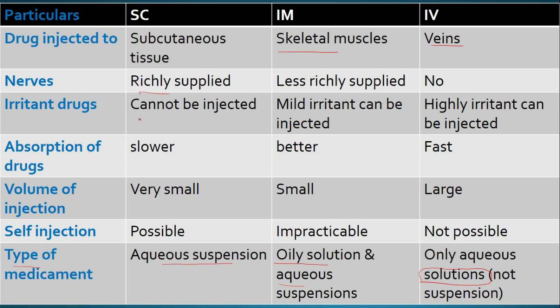Because of the nerve supply, we cannot administer irritant drugs through the subcutaneous pathway, since the subcutaneous route is richly supplied with nerves. We can administer mild irritant drugs through intramuscular, since it is less richly supplied. Since there is very less supply of nerves in case of intravenous route, we can administer highly irritant drugs also through the intravenous route.